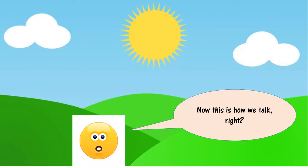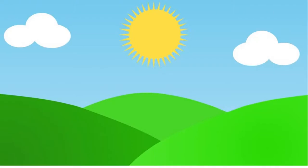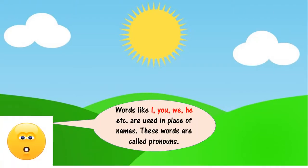Now this is how we talk, right? Words like I, you, we, he, etc. are used in place of names. These words are called pronouns. So now you know what is Nopland? Nopland is no pronoun land. Aisa land jahaan loog pronoun ka use nahi karte.